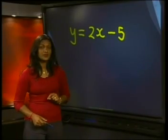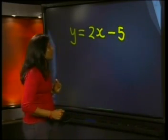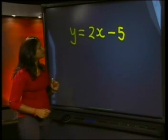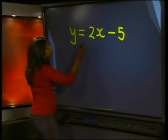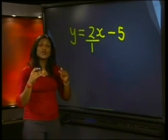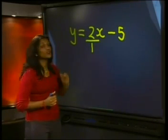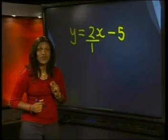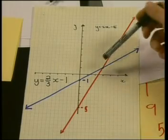We're ready for the second equation. The y-intercept is negative 5. The gradient is 2 — think of it as 2 divided by 1. When we move up 2 units, we move to the right by 1 unit. Both numbers are positive in this example. The red line shows the graph of the second equation, and it is easy to see that the two graphs intersect at point A.